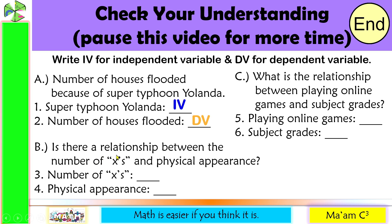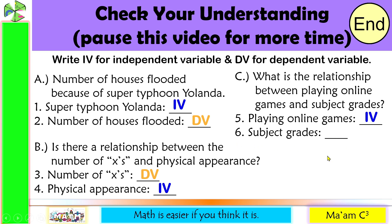Letter B: is there a relationship between the number of exes and physical appearance? The more beautiful or handsome you are, the more exes you have. So physical appearance is the independent variable, and number of exes is the dependent variable. Letter C: what is the relationship between playing online games and subject grades? The subject grades are dependent on playing online games — playing online games is the independent variable, and subject grades is the dependent variable.